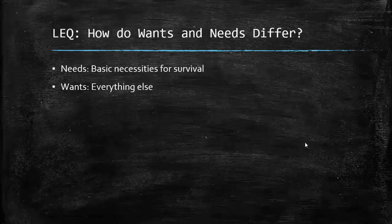LEQ number three — how do wants and needs differ? In economics, needs are anything needed for survival: clothing, shelter, and food. That's about it. Once all needs have been met, everything else is a want. If it doesn't help keep you alive, it is a want. Case in point, we are done from there.